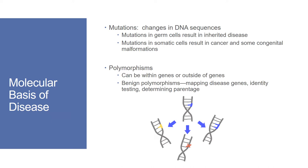We'll start out with a little review of mutations and polymorphisms. Mutations are variations in DNA sequences, and mutations in germ cells result in inherited diseases. Mutations in somatic cells can result in cancer or other congenital malformations. Polymorphisms are also variations in DNA sequences and can be found within genes or outside of genes in the non-coding regions. Benign polymorphisms can be useful for mapping disease genes, identity testing, and determining parentage, such as paternity testing.